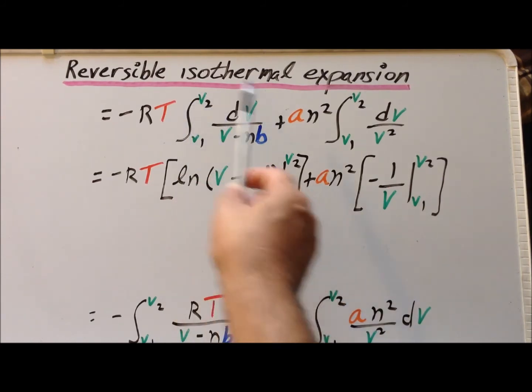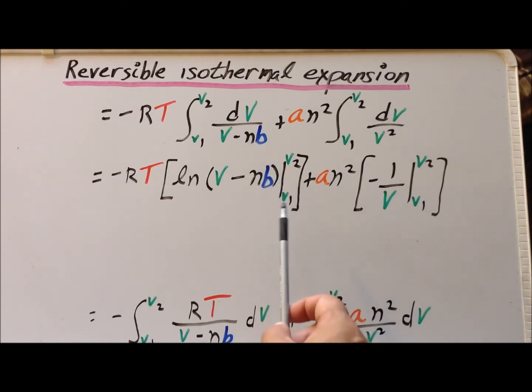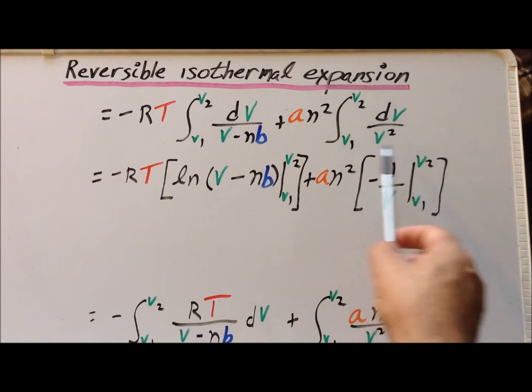And then applying the fundamental theorem, we evaluate it at the limits of V1 and V2. And secondly, here we have the integral of dV over V squared, which we can think of as V to the minus 2 power. So using our exponent formula, this is going to be minus V to the minus 1, or minus 1 over V, evaluated between V1 and V2.